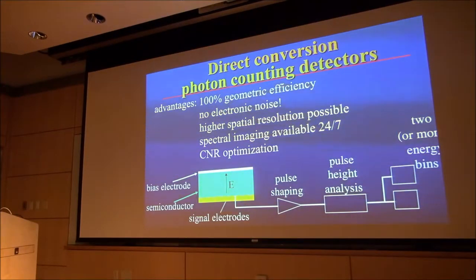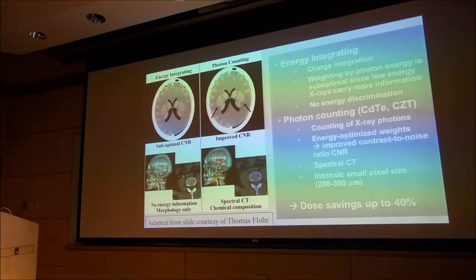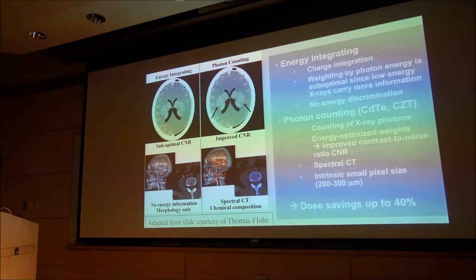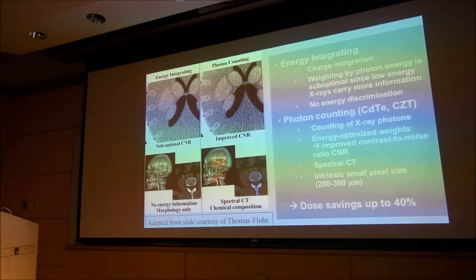This would let you do a hundred percent geometric efficiency, no electronic noise. Once you get rid of the paint, you can make the spatial resolution higher. If in addition you are able to do energy discrimination on the x-rays you detect, you could have spectral imaging all the time. You wouldn't have specific protocols for spectral imaging, it would always be there. This is a simulation of what is anticipated as an improvement from photon counting detectors. These are simulations of a brain scan with a conventional energy integrated detector versus photon counting detector at the same dose. You can start seeing details you couldn't see.